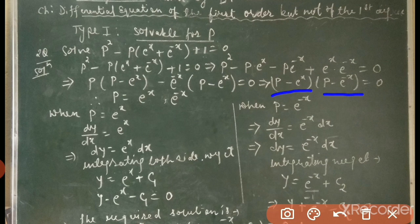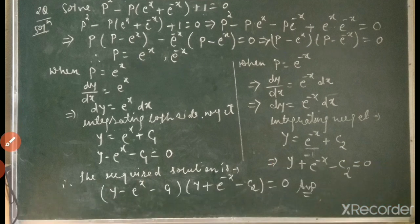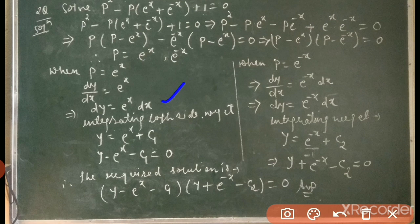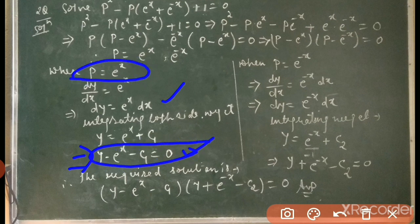We solve each case one by one. When p = eˣ: dy/dx = eˣ, so dy = eˣ dx. Integrating both sides: y = eˣ + c₁, written as y - eˣ - c₁ = 0. This is the first factor obtained by solving p = eˣ.